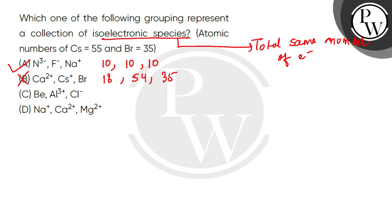Beryllium atomic number is 4, so neutral Be has 4 electrons. Aluminum atomic number is 13, so Al3+ has 10 electrons. Chlorine atomic number is 17, so Cl- has 18 electrons. Here the electron counts are different, so option C is not possible.